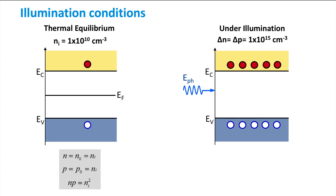Now let's illuminate the material and see what happens. We are adding an extra 10¹⁵ charge carriers in addition to the 10¹⁰ carriers present in crystalline silicon at thermal equilibrium. This is an enormous change in concentration of charge carriers. We now have many more electrons occupying states in the conduction band and many more holes occupying states in the valence band.